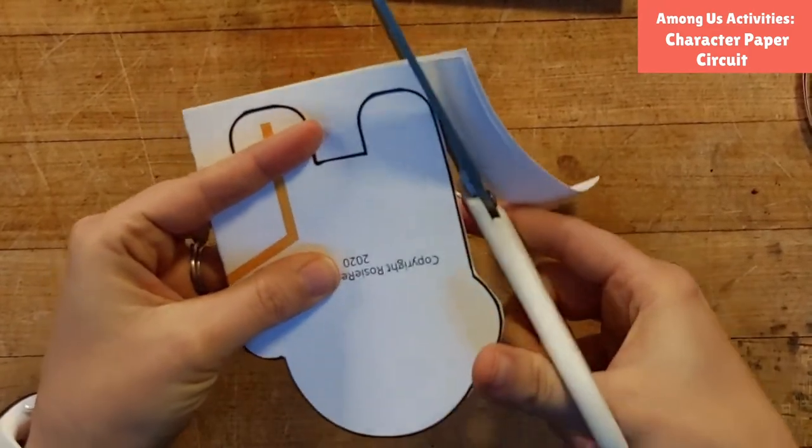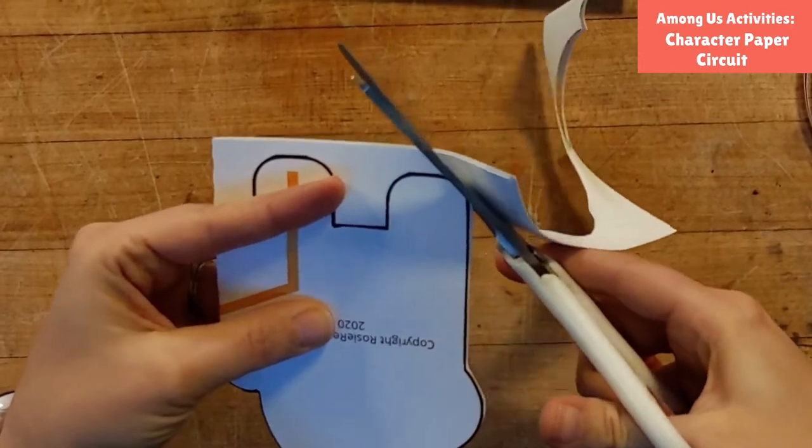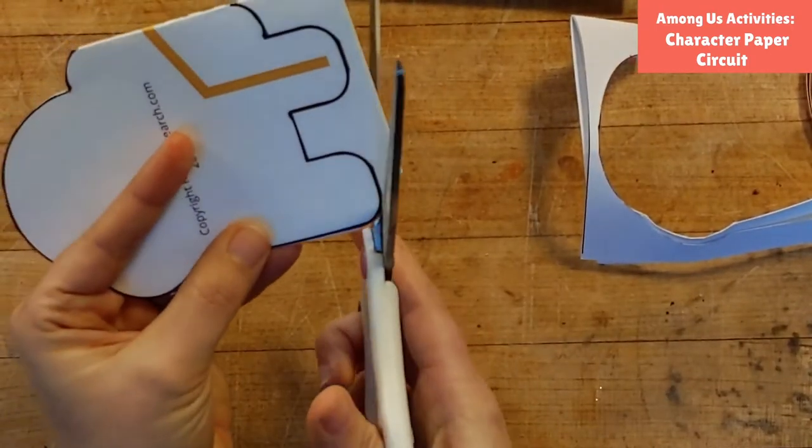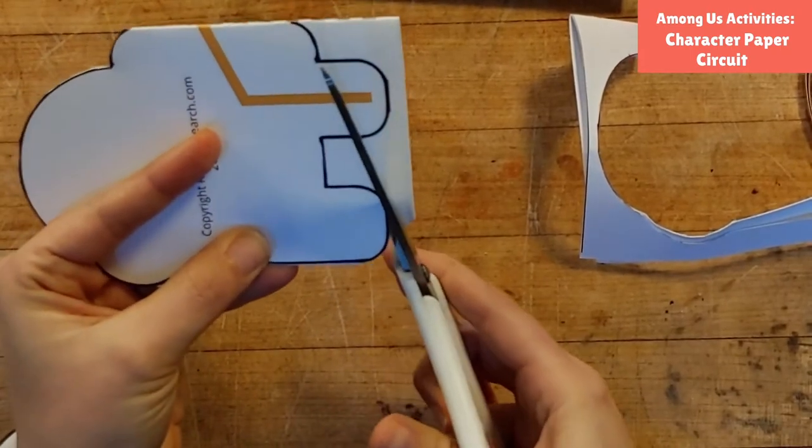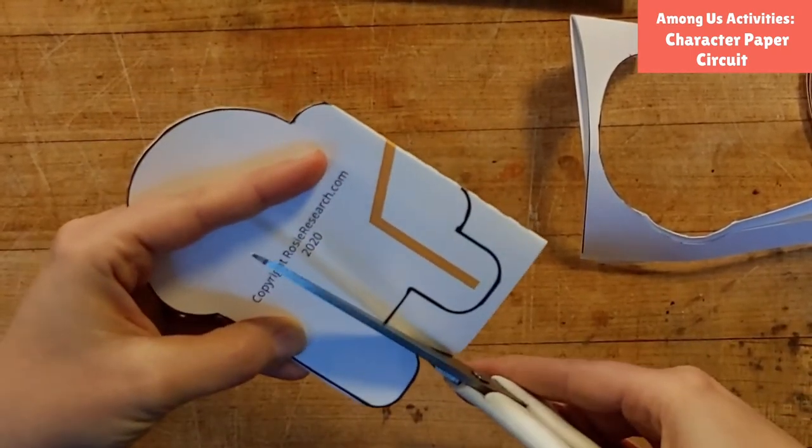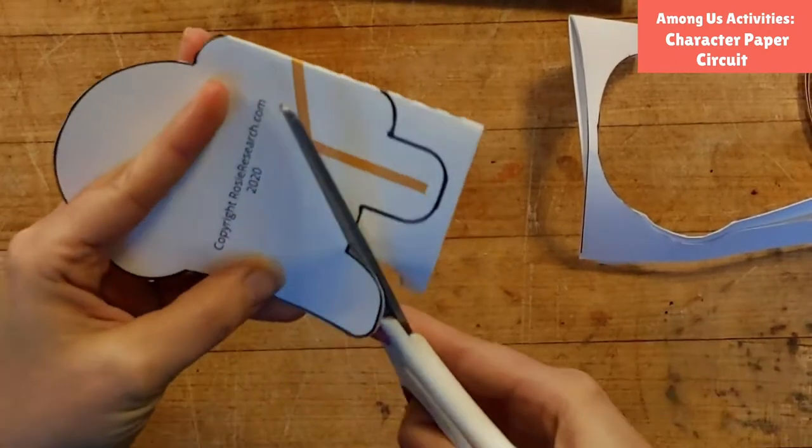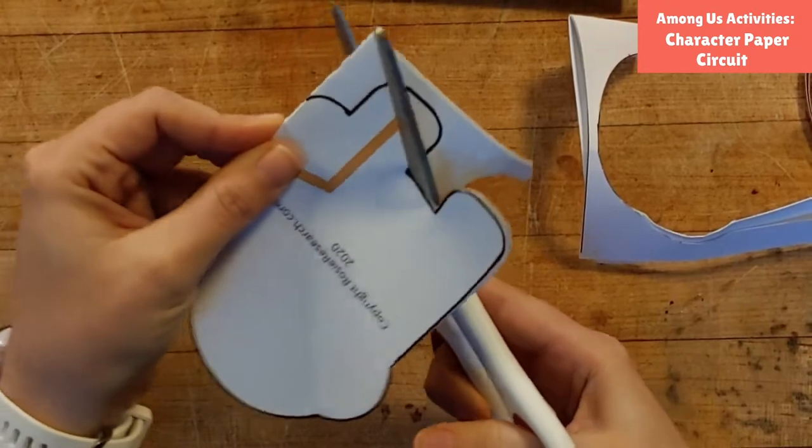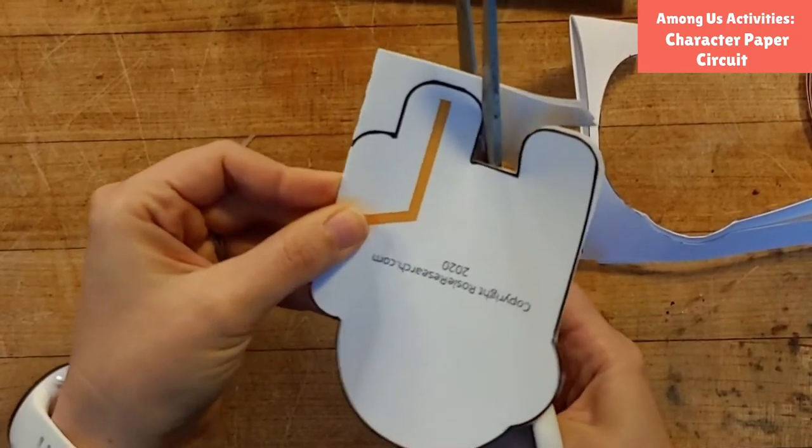It just gives it a lot more protection and as I've taught classes I've learned that it can be really frustrating if you get your paper circuit working and then all of a sudden it stops working has one little wire got bumped the wrong way and just folding it and having it double thick. I have found always sort of fixes that situation for us.